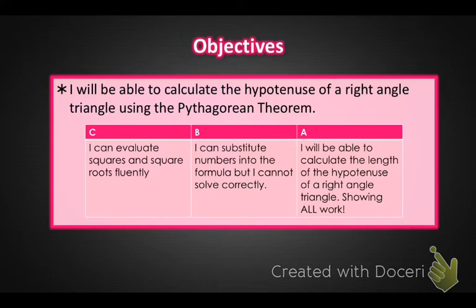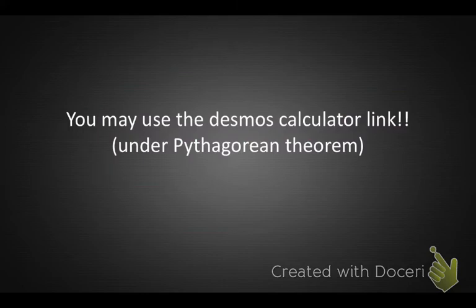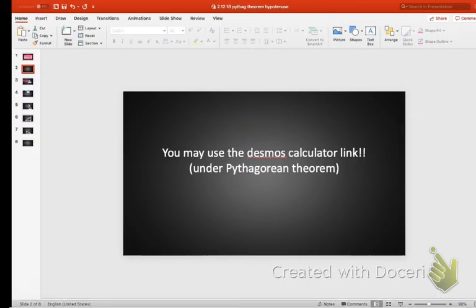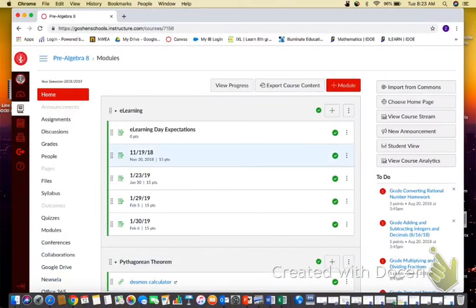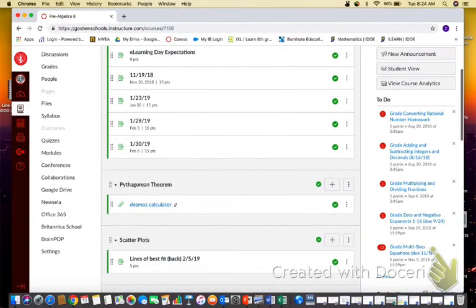Make sure you are taking good notes because you are going to be asked to upload them to Canvas. So you may use the Desmos calculator on your Canvas page. You are only allowed to use the Desmos calculator. You should not be using your phone calculator or the calculator on your computer. I want you to only use the Desmos calculator for Pythagorean Theorem.